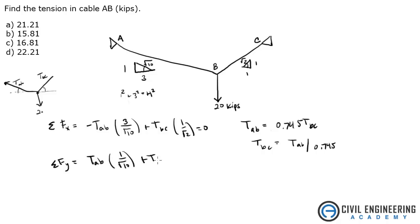Plus the tension in BC, that's positive, times 1 over square root of 2. That's the vertical component over the hypotenuse. And minus 20, set that equal to 0.